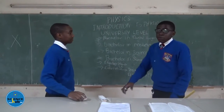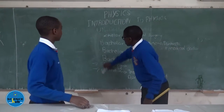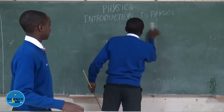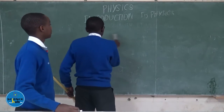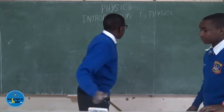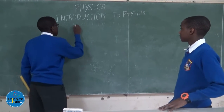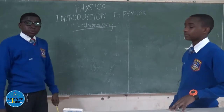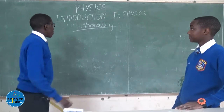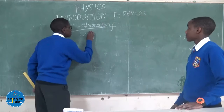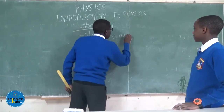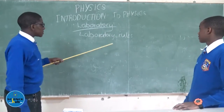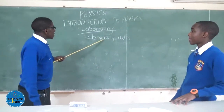Now we move to basic laboratory rules. First, we should ask ourselves: what is a laboratory? A laboratory is a special room equipped with the necessary facilities to carry out experiments in science. In the laboratory, there are sockets, chemicals on the floor, and some dangerous chemicals, so we need to be guided by rules.